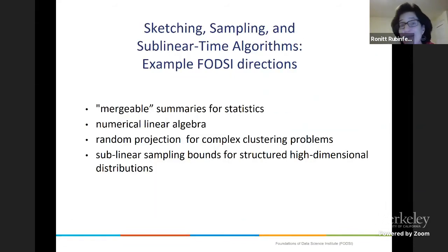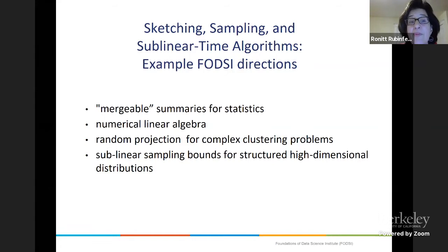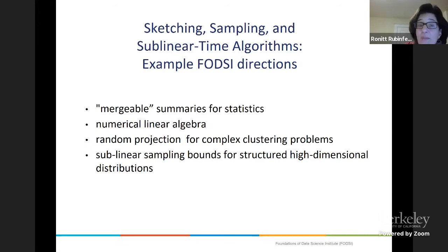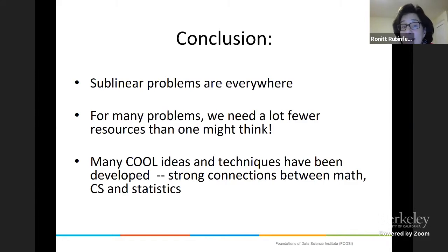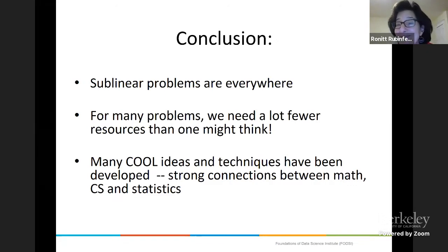In the FODC proposal, there are many directions being considered: mergeable summaries for statistics, numerical linear algebra, random projections for complex clustering problems, sublinear sampling bounds for structured high-dimensional distributions, and many other directions. In conclusion: sublinear problems are everywhere. For many of these problems, we need a lot fewer resources than you might think, and there are really cool ideas and techniques with very strong connections between math, CS, and statistics. Thanks a lot.